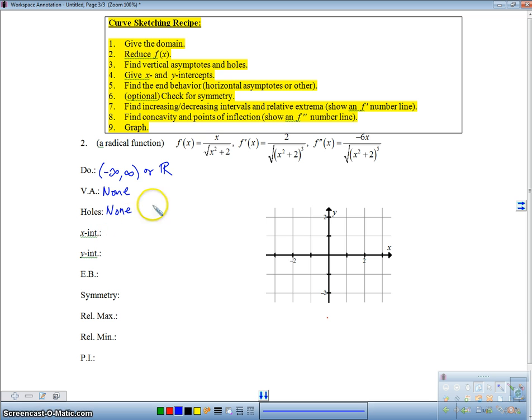x-intercept. The x-intercept, we're going to set this equal to zero. We're going to deal with the numerator here, and that's going to give us zero. So I'm just going to put the point as (0,0). And, well, hey, my y-intercept is the same thing. We have the origin, and the origin must be my y-intercept as well.